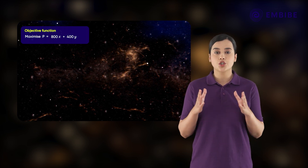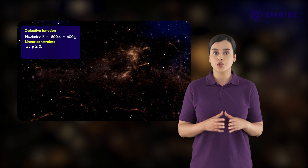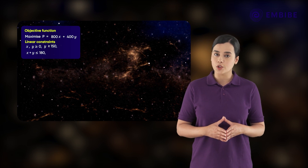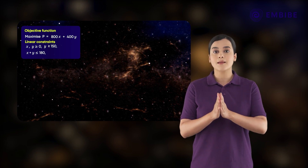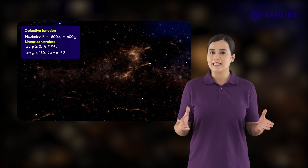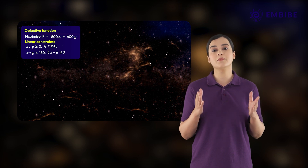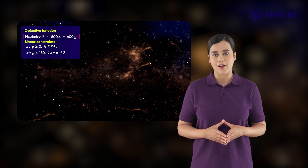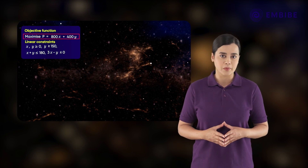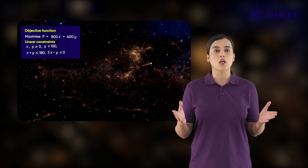X and Y should be greater than or equal to zero. Y should be greater than or equal to 150. X plus Y should be less than or equal to 180, and 3X minus Y should be less than or equal to zero. Thus, we have formulated the linear programming problem to find the maximum value of the objective function of decision variables X and Y, subject to a set of linear inequalities called linear constraints.